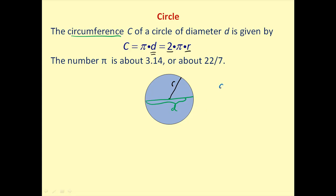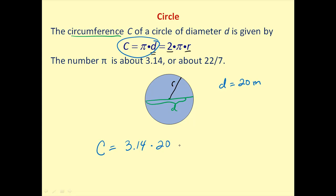So depending on what you're given will affect which formula you'll use. As an example, if the diameter is equal to 20 meters, we use the first formula: pi, approximately 3.14, times 20 meters, which equals approximately 62.8 meters. Since 3.14 is an approximation of pi, this is an approximation of the true circumference.